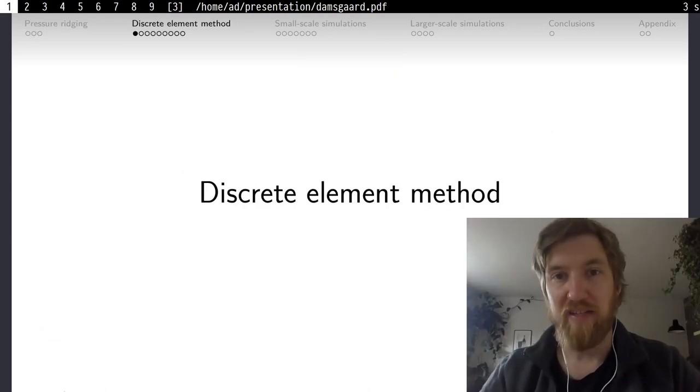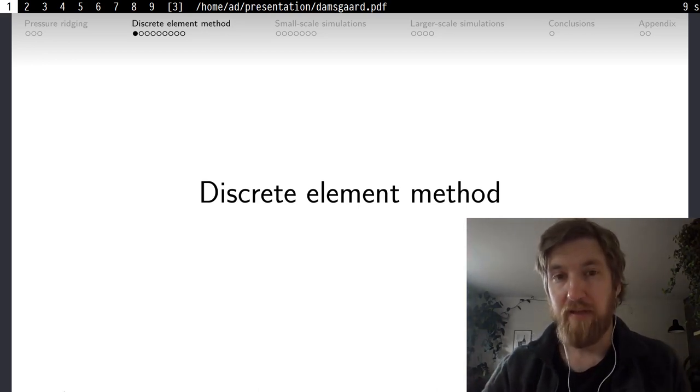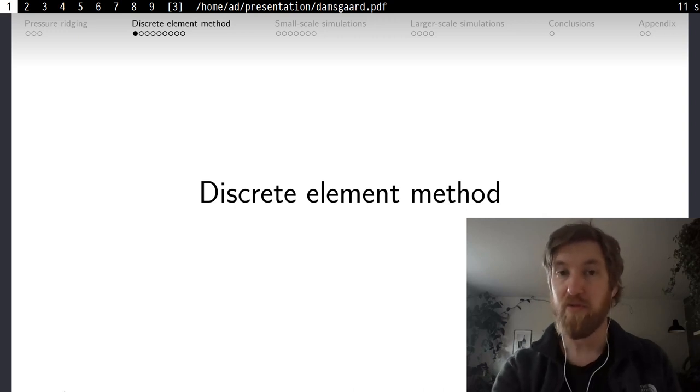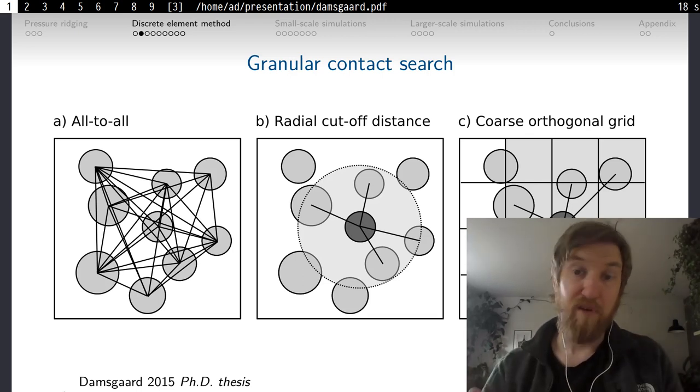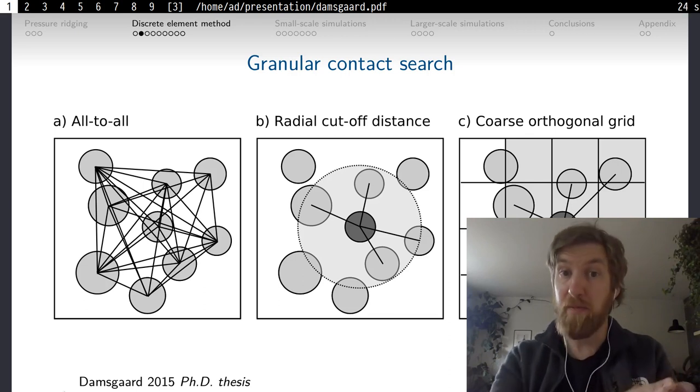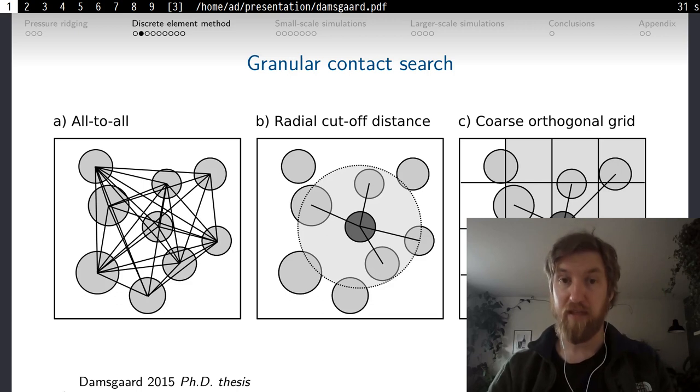First off, I would like to speak a little bit about the discrete element method. When wanting to deploy the discrete element method, the first task is to choose your model dimensionality. While three-dimensional modeling gives the most complete picture, for sea ice models it's often reasonable to reduce the problems into two dimensions, where the two-dimensional plane is the ocean surface. In that case, you disregard any vertical movement within that setting.